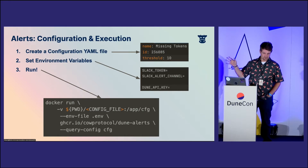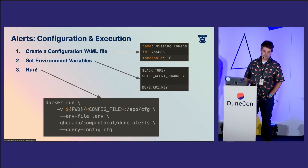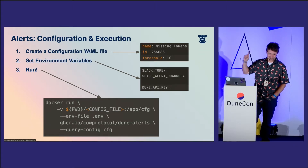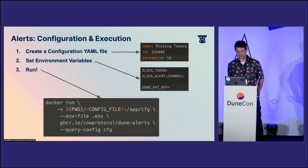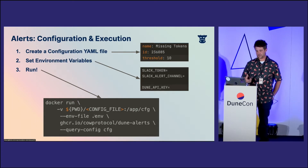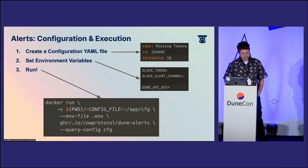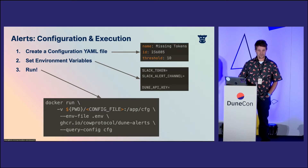This is how easy it is to use — it doesn't really require anything except Docker. You will create a configuration file. Give it a name — maybe 'missing tokens,' that's the actual name, it's just for the logs. A query ID and some sort of a threshold. You'll have a few different environment variables: the Dune API key, a Slack token, and a channel the post is supposed to go in. Then it is as easy as a Docker run command — you're mounting the configuration volume into the Docker container with your query ID and threshold, providing the environment variables like the Dune API key, and running the Cow Protocol Dune Alerts container with the configuration file mounted as a volume.